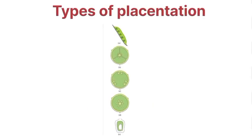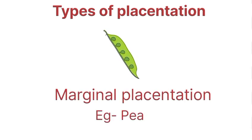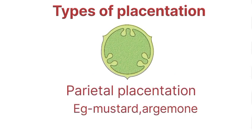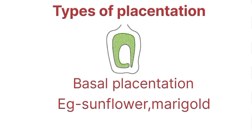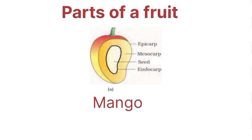Types of placentation: first is marginal placentation — example is pea. Next is axile placentation — examples are china rose, tomato, lemon. Next is parietal placentation — examples are mustard and Argemone. Next is free central placentation — examples are Dianthus and Primrose. Next is basal placentation — examples are sunflower and marigold.